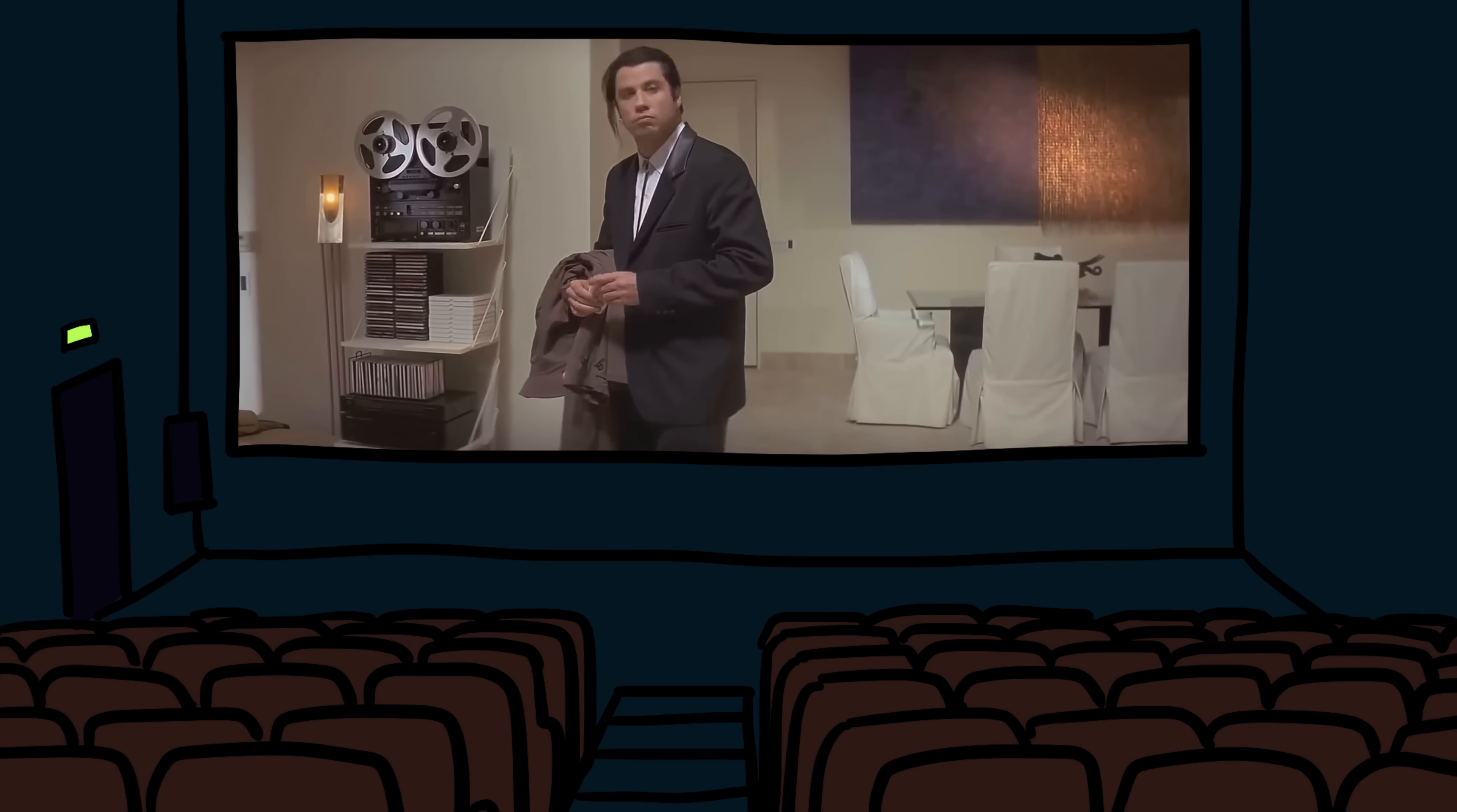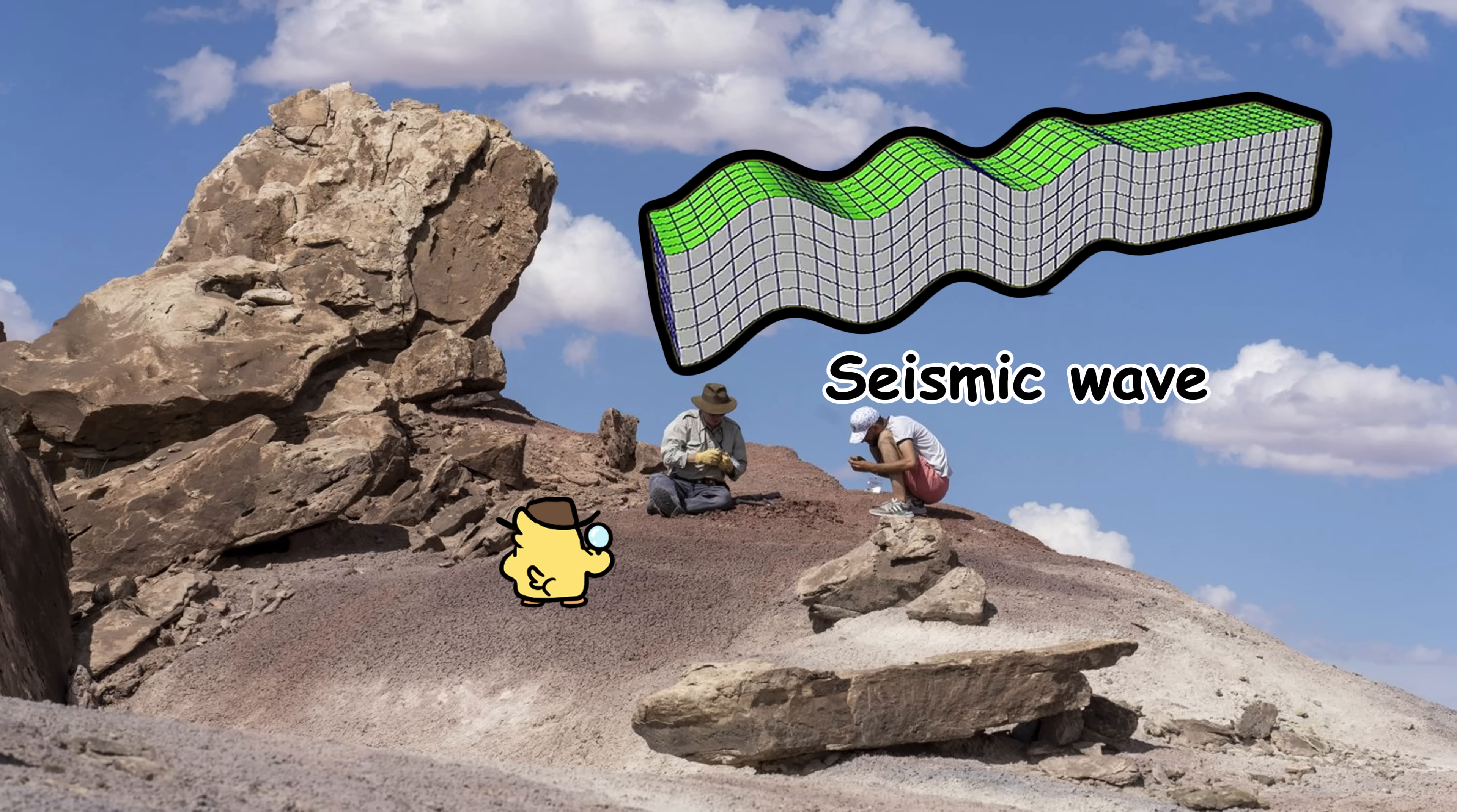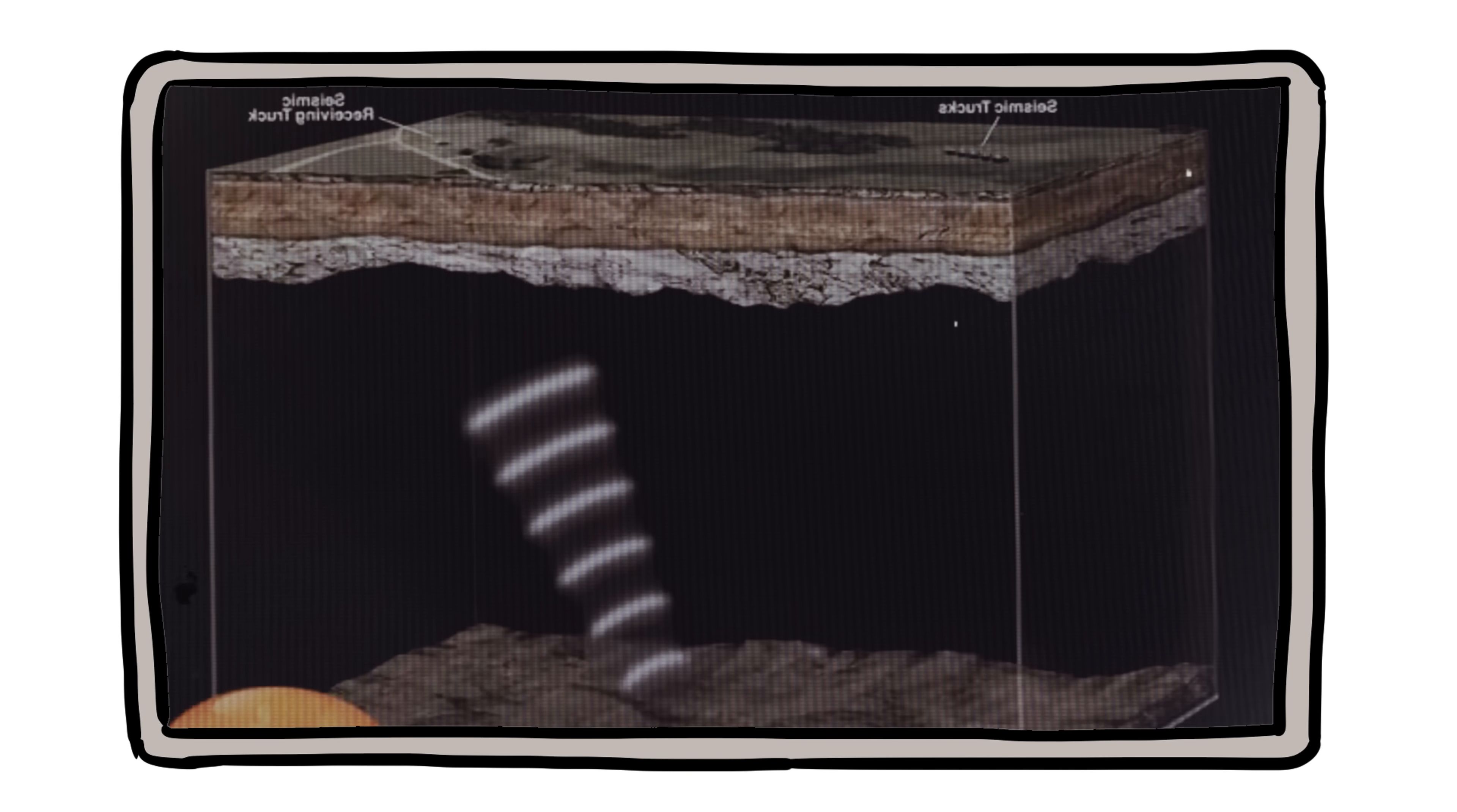How do we know it's there? Humans didn't always know where to look. In fact, the first oil wells were basically educated guesses. Today, geologists use seismic waves to map underground layers. It's like doing an ultrasound on the earth. They send sound waves down, and based on the echoes that bounce back, they get a picture of what's underfoot.